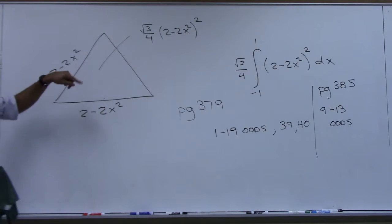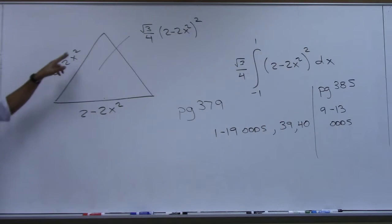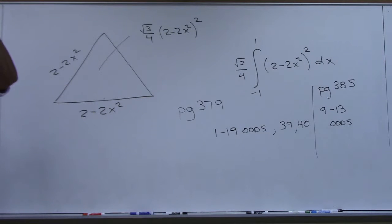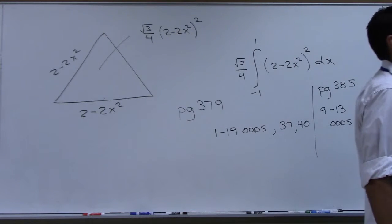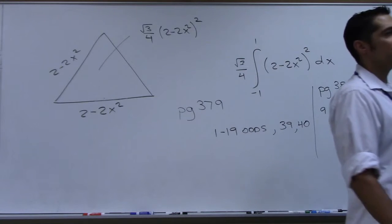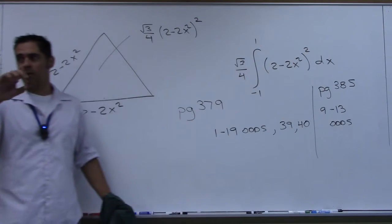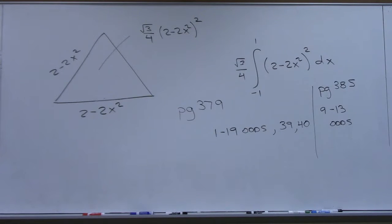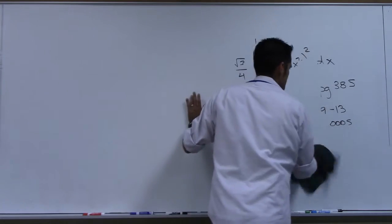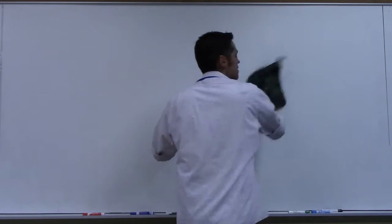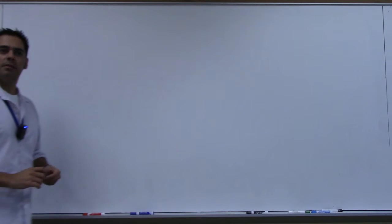I was thinking about this while we were drawing the equilateral triangle. I asked — equilateral triangle, all the angles have to be the same, so what's this angle? Everyone said 60 degrees. Why? The sum of the angles of a triangle is 180 degrees, right? Not always.